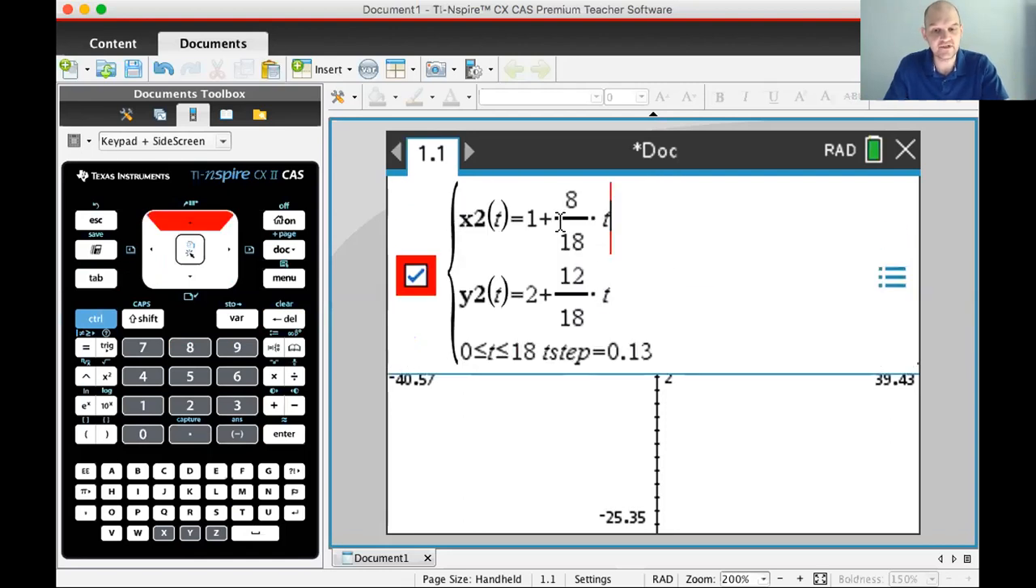And that's what was supposed to happen because they're the same line segment. And when I enter the third one, it's also supposed to be the same line segment, you're just going a different way. So 9 minus 8 over 12T, and 14 minus 12 over 12T, and this should take 12 minutes. So you can see all three of them overlapping. So we've probably entered these correctly.